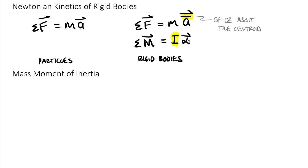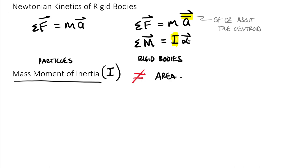The term I is our mass moment of inertia. I want to highlight the difference between mass moment of inertia and area moment of inertia because they are not the same thing. Confusingly, they use the same variable. Both need to be about some kind of point or axis, so they both have a subscript.